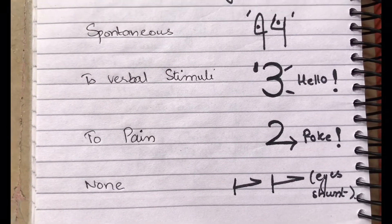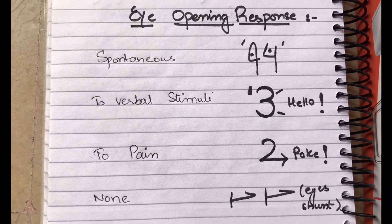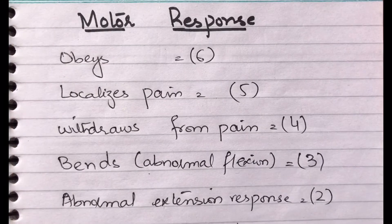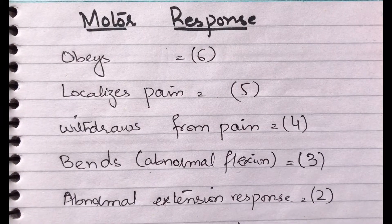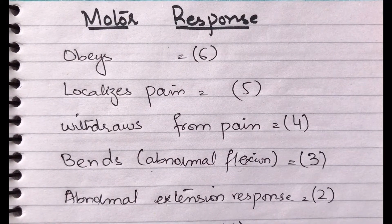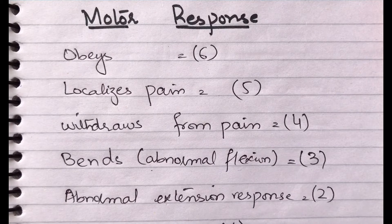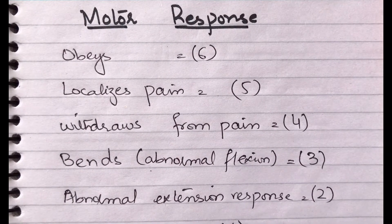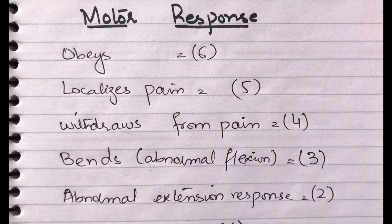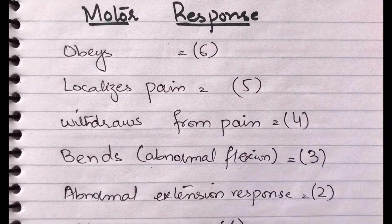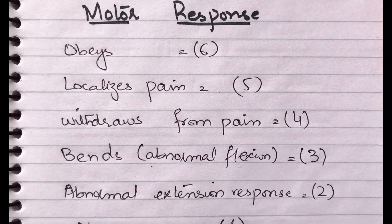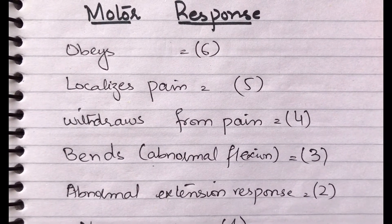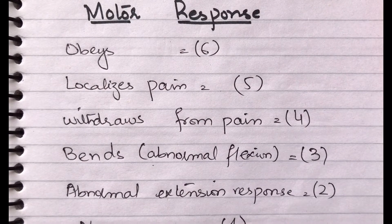For the motor response: if the patient fully obeys commands — like a student-teacher relationship where the student is totally obedient — we give a score of 6. If the patient localizes pain, that is a score of 5.